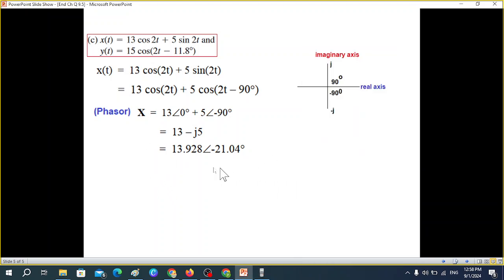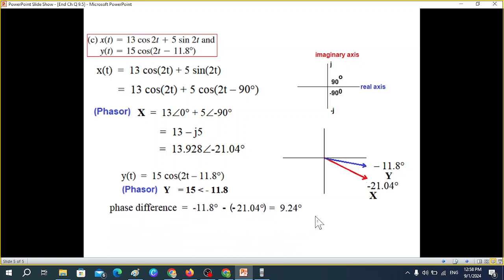The second signal y(t) = 15 cos(2t - 11.8°) is already in proper phasor form with magnitude 15 and angle -11.8°. When we plot both in phasor form, the difference is 9.24 degrees. Looking at clockwise versus anti-clockwise direction, the blue signal leads. Therefore y leads x(t) by 9.24 degrees.